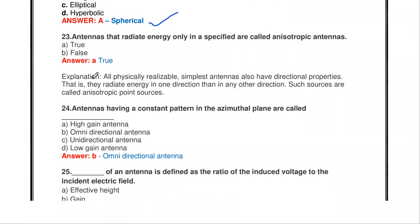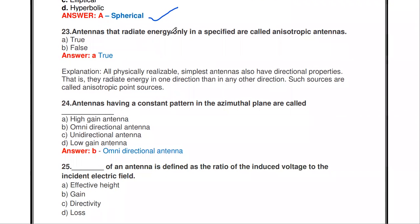The next question: antennas that radiate energy only in a specified direction are called anisotropic antennas — true or false? True. Based on the direction of radiation, antennas are classified into two types: isotropic antennas, which radiate energy equally in all directions, and anisotropic antennas, which radiate energy only in a specified direction.